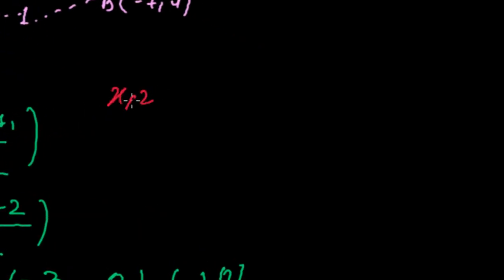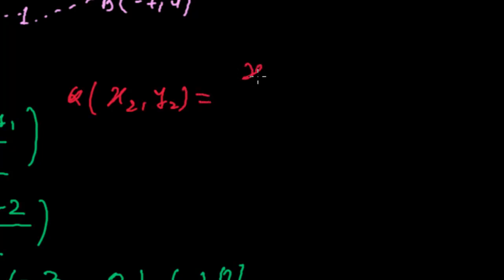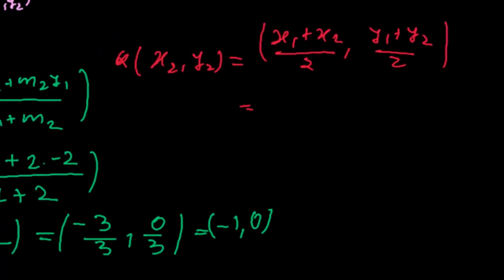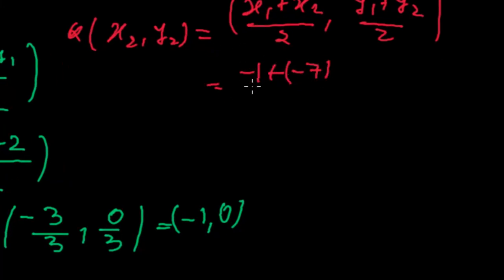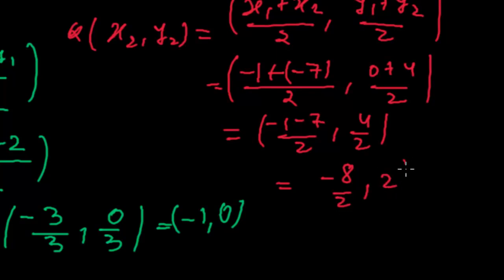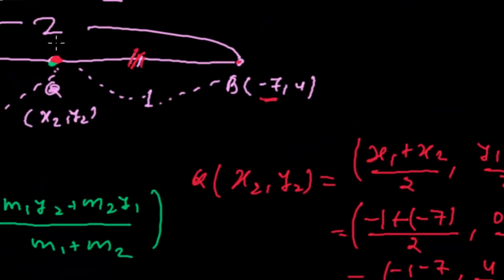So Q(x2, y2) equals the midpoint of P(−1, 0) and B(−7, 4). Applying the formula: x = (−1 + (−7)) / 2 = −8/2 = −4, and y = (0 + 4) / 2 = 4/2 = 2. So the Q point is minus 4 comma 2.